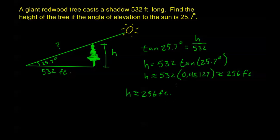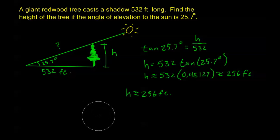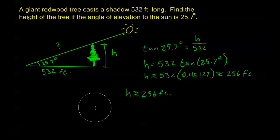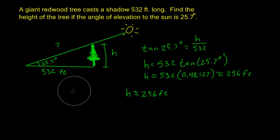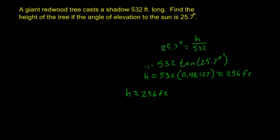This was a SOHCAHTOA example using one triangle. In the next three examples — one in this video and two in the next — we're going to look at what are called two-triangle problems. It'll be either one triangle inside another, like the next example, or two triangles next to each other sharing a common side. Let's go ahead and look at this next example.